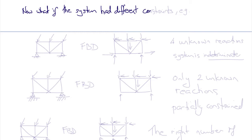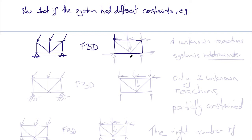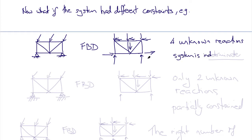But what if the system had different constraints? For example, what if the supports were pinned at both ends but without rollers? Now the free body diagram would look similar — we have the same applied force components including the weight, and the same x and y reaction components at A. But now at B we also have x and y components of reactions, giving four unknown reactions and only three equations, so the system is indeterminate.